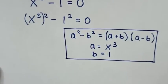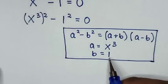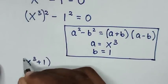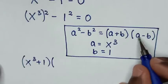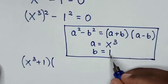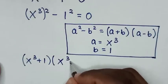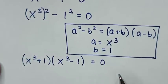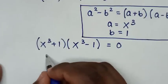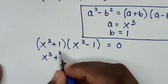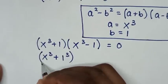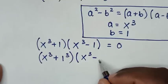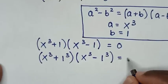Then in the next step, our equation will be (x³ + 1) times (x³ - 1) equals 0. We can also write this as x power 3 plus 1 power 3, times x power 3 minus 1 power 3, equals 0.